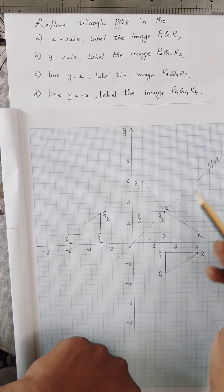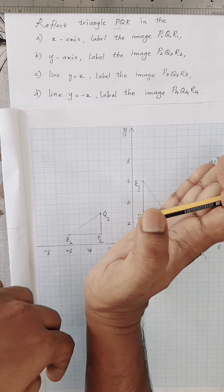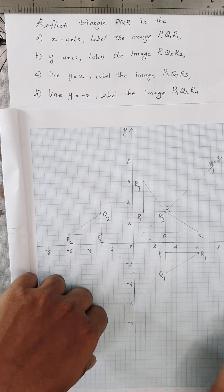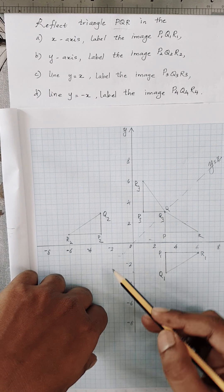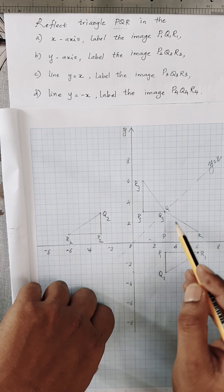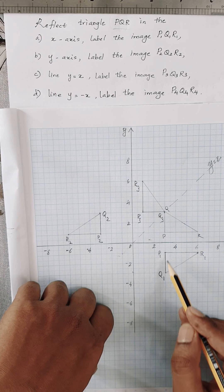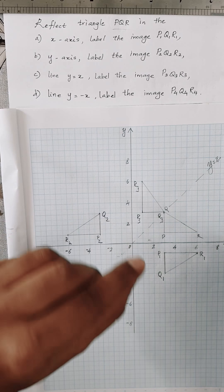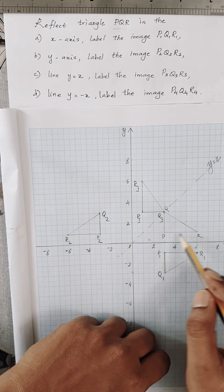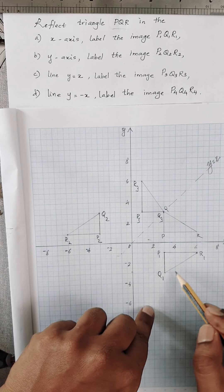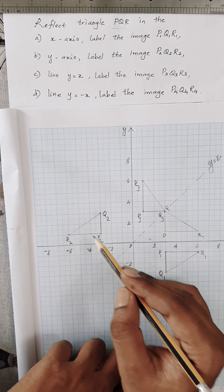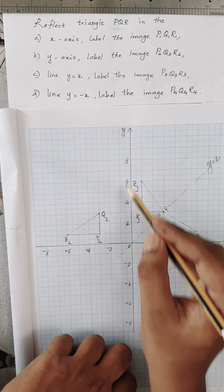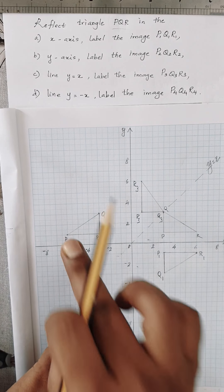You can observe that if you fold along the mirror line, the object will fit exactly on the image. That's how you can verify a reflection. Even in the previous two reflections: when PQR is the object and P1, Q1, R1 is the image, if you fold along the x-axis, PQR fits exactly on P1, Q1, R1. The same applies to P2, Q2, R2 — if you fold along the y-axis mirror line, the object fits on the image.